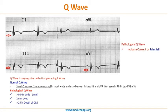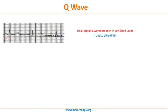Pathological Q waves are seen in current or prior myocardial infarction. In many cases of prior MI, you can find pathological Q waves. In this ECG, you can see small septal Q waves as seen in left-sided leads. These Q waves are small — not more than 2 mm deep or more than one small square in width — so they are normal Q waves.